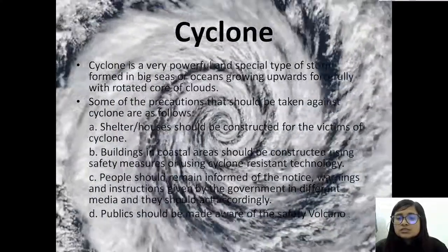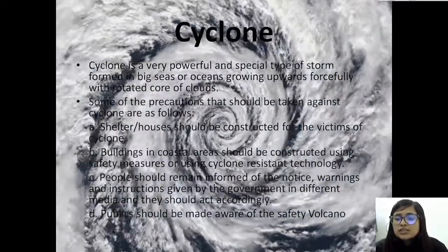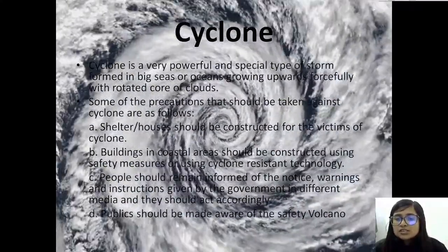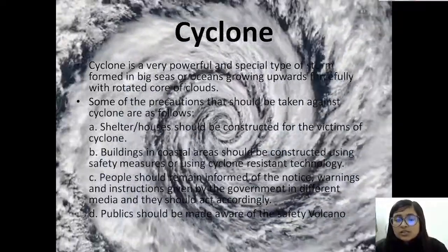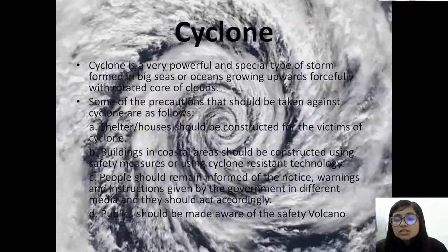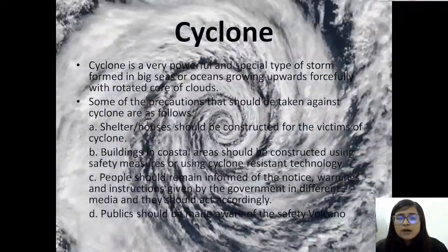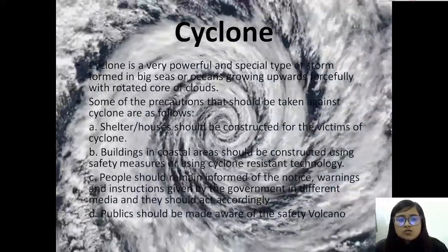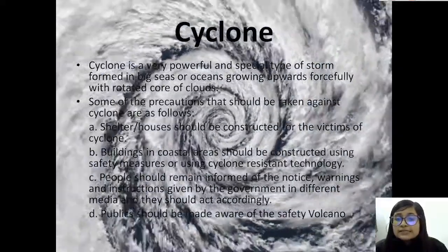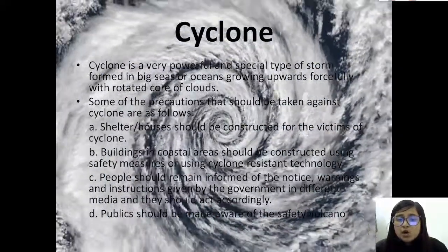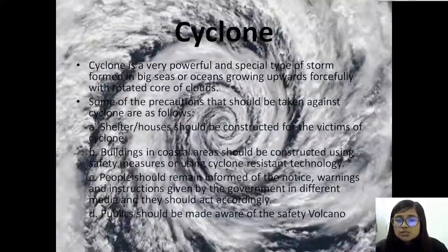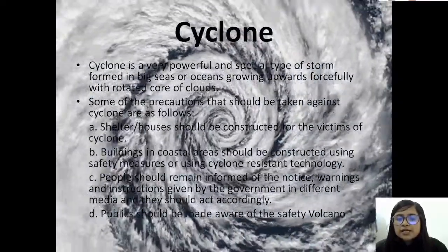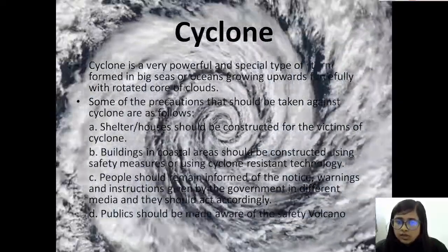Another type of natural disaster is cyclone. A cyclone is a very powerful and special type of storm, formed in big seas or oceans, growing upward forcefully with a rotating core of clouds.